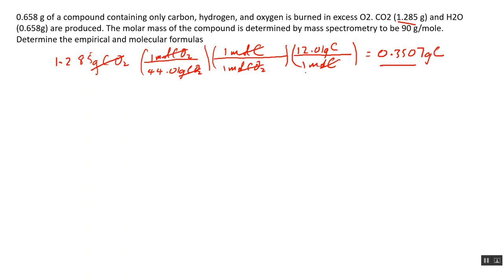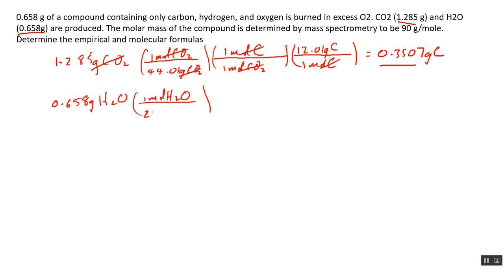The next step is to get the mass of hydrogen. To do that we start with the mass of H₂O, which is 0.658 grams of H₂O, and convert that to moles: one mole of H₂O divided by 18.02 grams of H₂O as the molar mass.